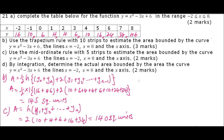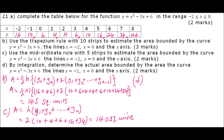Finally, we go to part D: by integration, determine the actual area bounded by the curve Y equals X squared minus 3X plus 6, the lines X equals minus 2 and X equals 8, and the X axis. Here, we are supposed to integrate. The lower limit is minus 2 and the upper limit is 8. We integrate X squared minus 3X plus 6 with respect to dx.